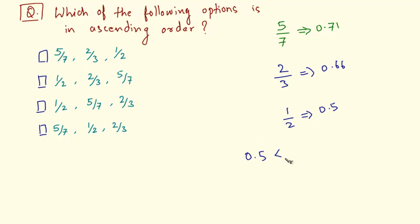Then 1 by 2 we always know is 0.5. Now which one of them is the smallest? So 0.5 is less than 0.66 which is again less than 0.71. So 0.5 is 1 by 2, 0.66 is 2 by 3, 0.71 is 5 by 7. So this is the correct answer.